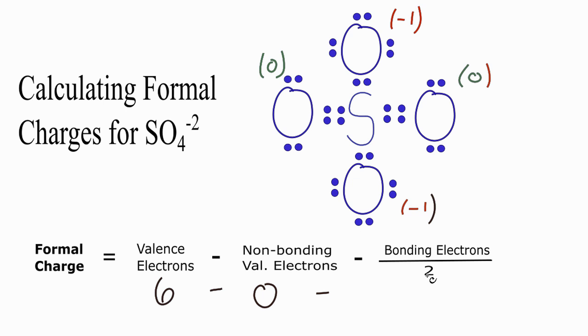And then we'll subtract the bonding electrons divided by 2. So we have 2, 4, 6, 8, 10, 12. So 12 divided by 2. So the formal charge on the sulfur in the center is going to be 0.